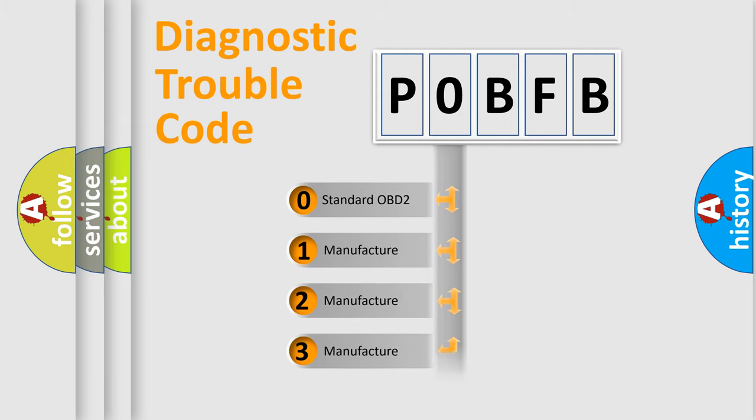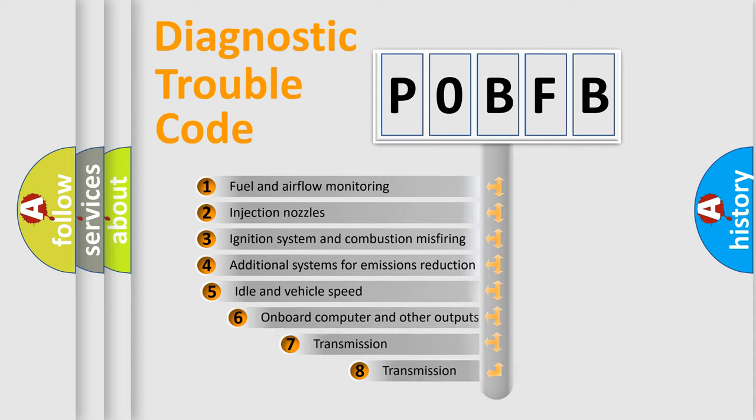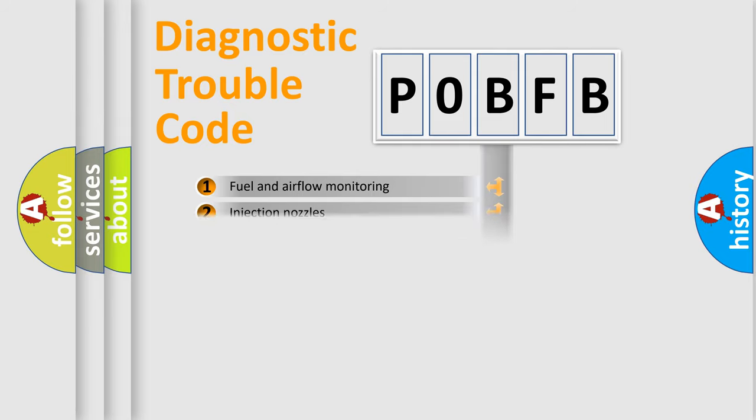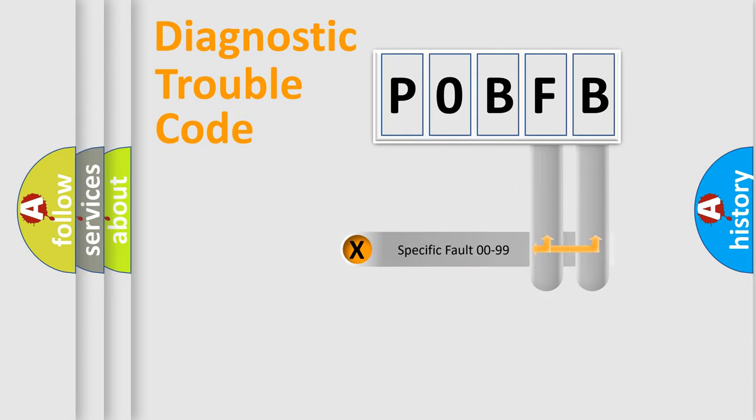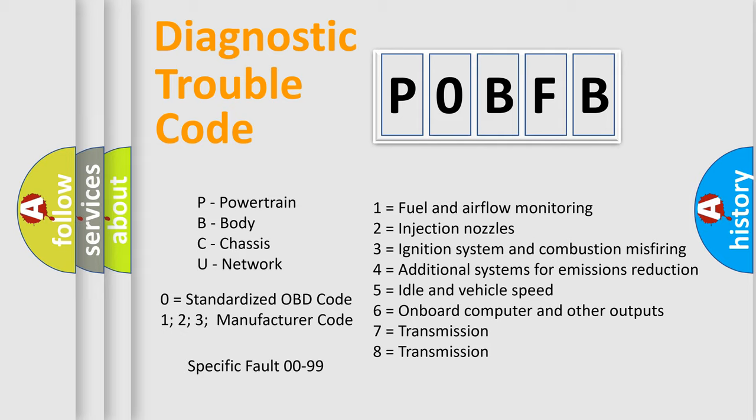In the case of numbers 1, 2, or 3, it is a more precise expression of the car-specific error. The third character specifies a subset of errors. The distribution shown is valid only for the standardized DTC code. Only the last two characters define the specific fault of the group. Let's not forget that such a division is valid only if the other character code is expressed by the number zero.